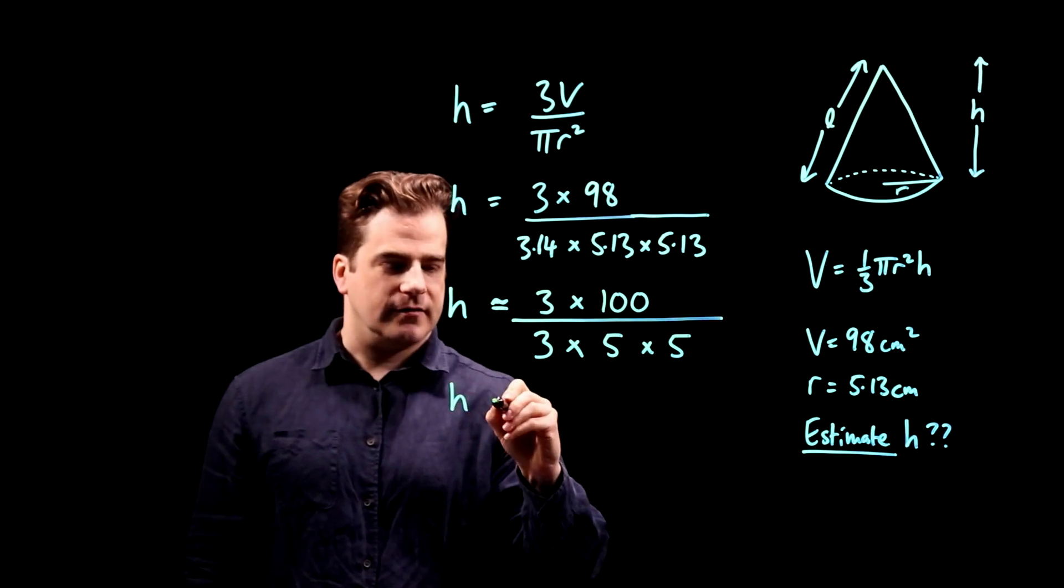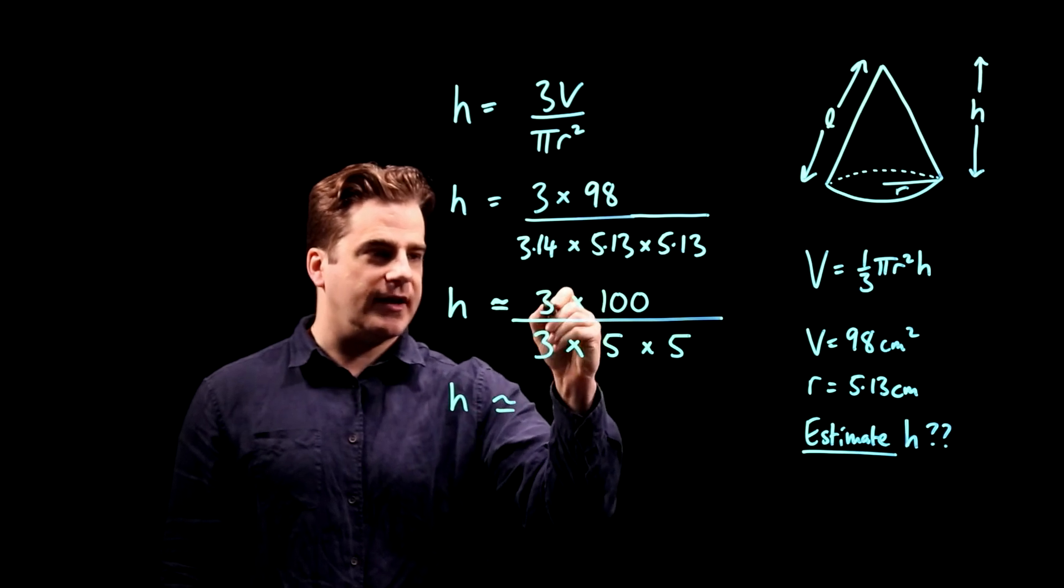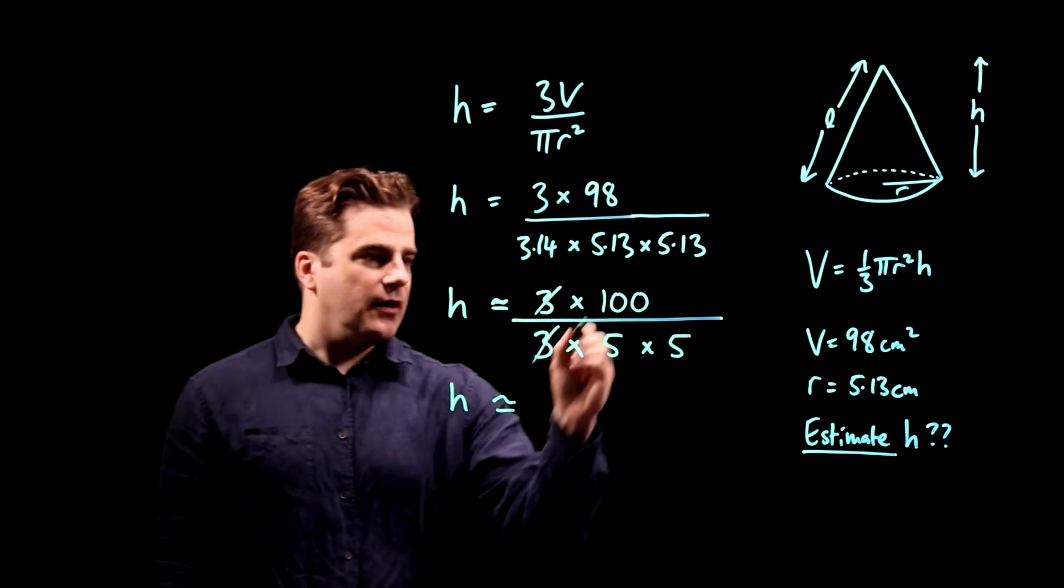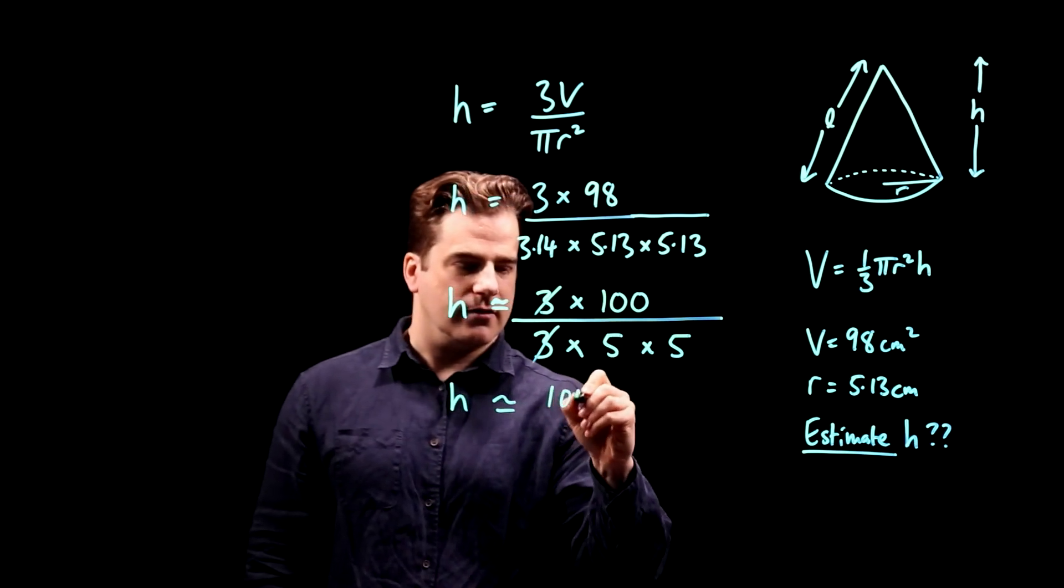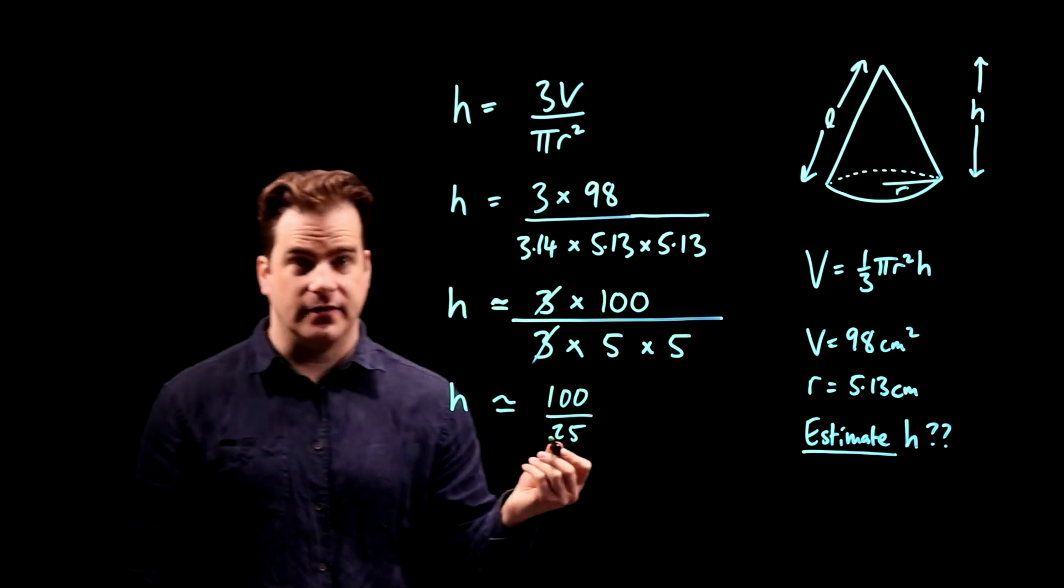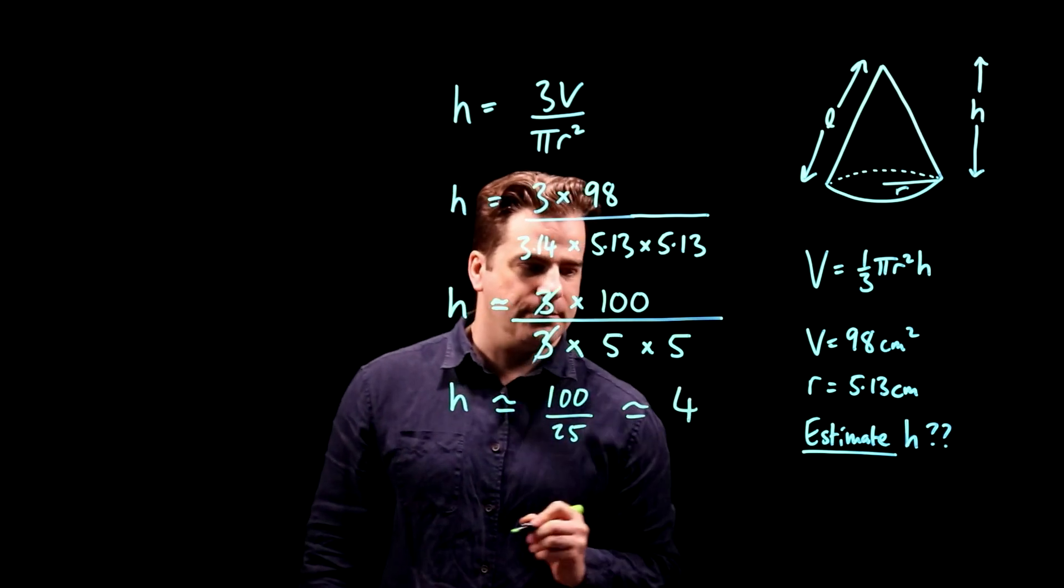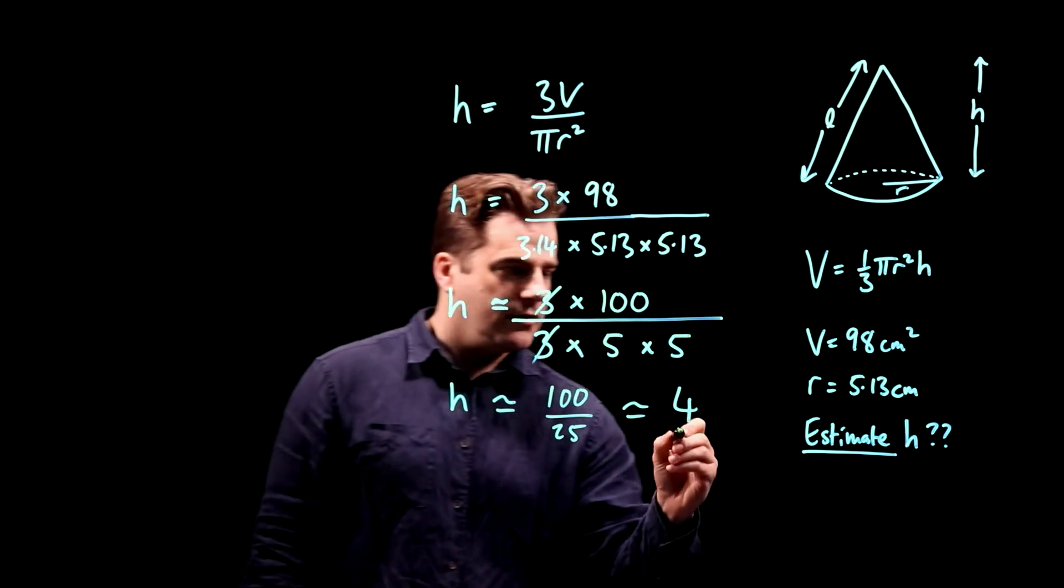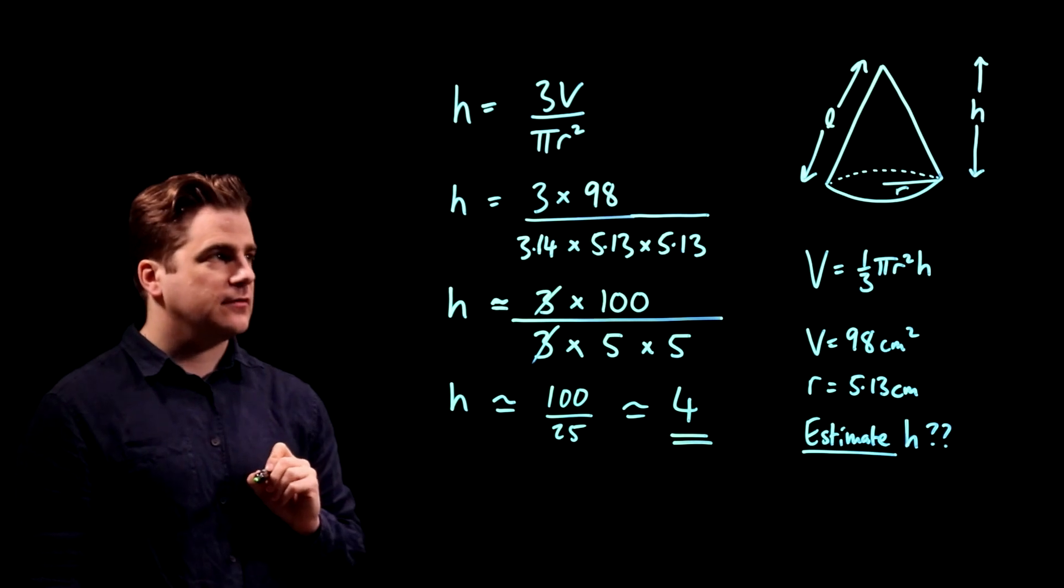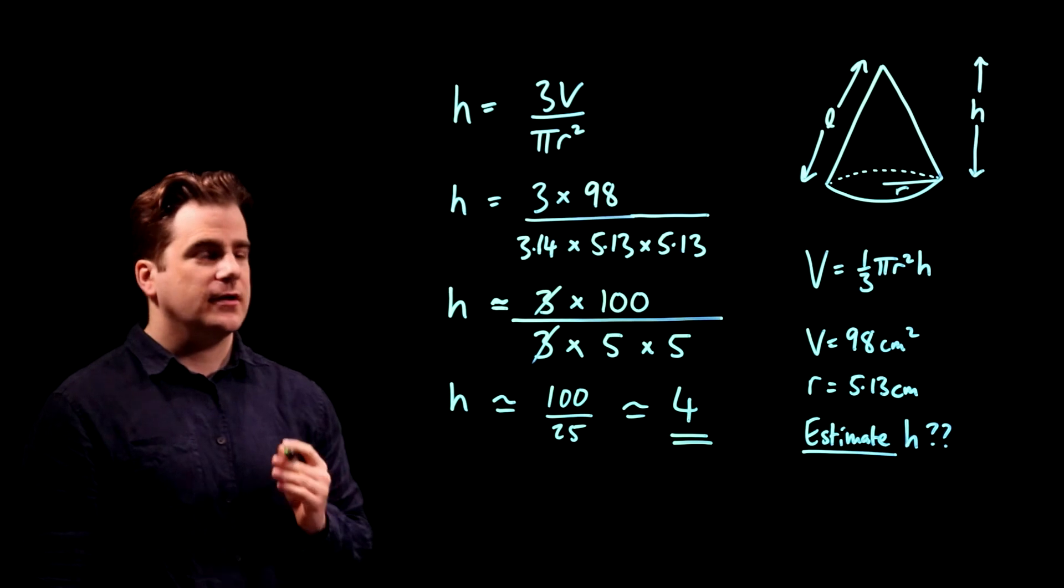h is approximately equal to, well, three on the top, three on the bottom, we can cancel them straight away. 100 divided by 5 times 5 is 25. That's nice and easy. We can do that in our heads. So that's approximately equal to 4. There we go. That is our estimate for the height of the cone.